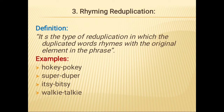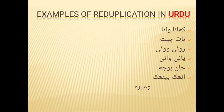The third type is rhyming reduplication. It is the type of reduplication in which the duplicated word rhymes with the original element in the phrase. Examples include 'hokey-pokey,' 'super duper,' 'itsy-bitsy,' 'walkie-talkie,' 'teeny weeny,' 'chick flick,' 'slim jim,' 'nutter butter,' and 'lovey-dovey.' These all are examples of rhyming reduplication.